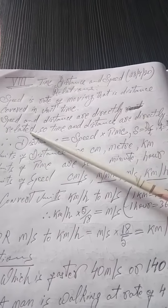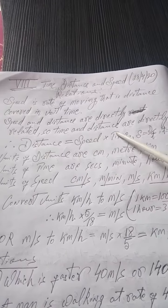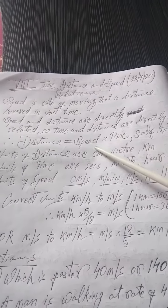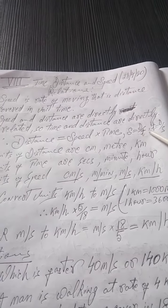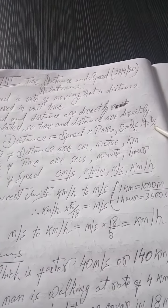Like that. Therefore, the distance is speed into time, as they are directly related. Or you can write, speed is distance divided by time or time is distance divided by speed.